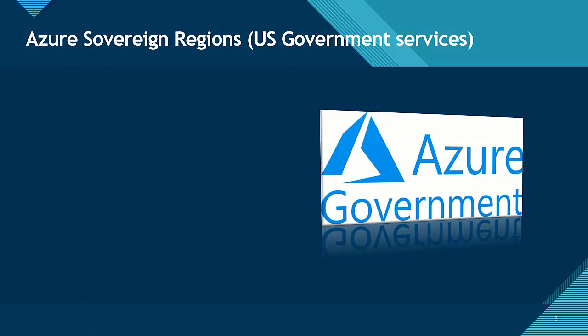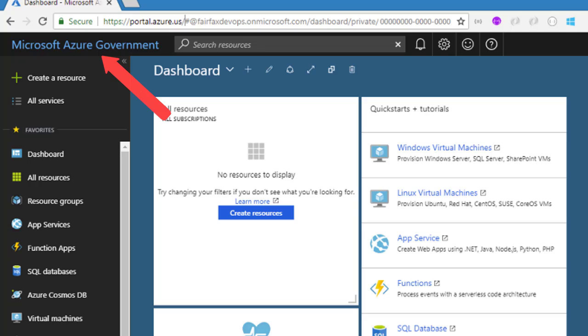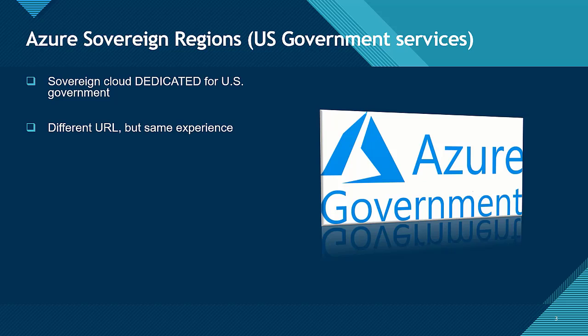Let's take a look at some of these sovereign regions, starting with Azure Sovereign Region U.S. Government Services. Azure Government is a sovereign cloud dedicated for U.S. Government cloud customers only, such as United States federal, state and local governments. Sovereign in this case means it is a physical, isolated and separate instance of Microsoft Azure. So instead of reading Microsoft Azure, it reads Microsoft Azure Government, and the URL is also different — Portal.Azure.us instead of Portal.Azure.com associated with the Commercial Public Azure Cloud.